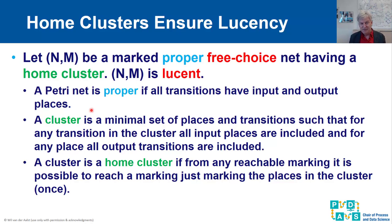So if a net is proper — a syntactical requirement — and it is free choice — a very natural property — and it has a home cluster — also a very natural property — then by definition it is lucent. That is the key result.